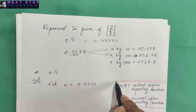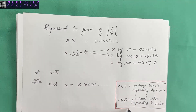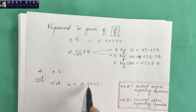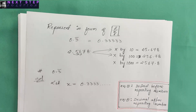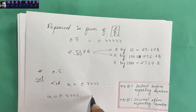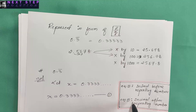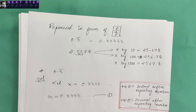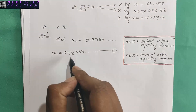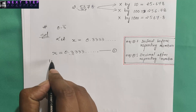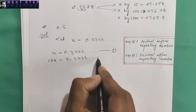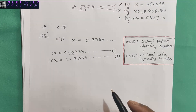Here, the decimal is already immediately before the repeating digit 3, so this is equation one: x equals 0.3333. For equation two, we want the decimal after the repeating digit 3, so we move it one digit to the right by multiplying by 10. This gives 10x equals 3.3333 as equation two.